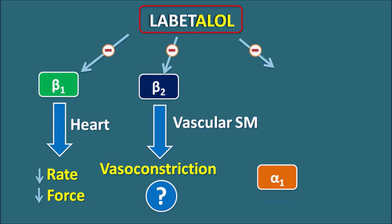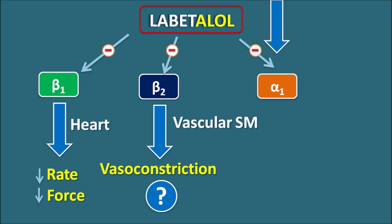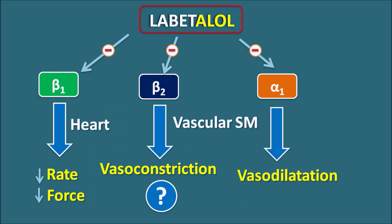If Labetalol produces vasoconstriction via beta-2 blockade, how can it act as an antihypertensive? This is explained by its action on alpha-1 receptors. Labetalol blocks alpha-1 receptors on vascular smooth muscle. Normally, alpha-1 receptors produce vasoconstriction, so by blocking them, Labetalol produces vasodilation. The beta-2 receptors on vascular smooth muscle are mainly confined to blood vessels supplying skeletal muscle and liver; other systemic blood vessels are predominantly equipped with alpha-1 receptors.